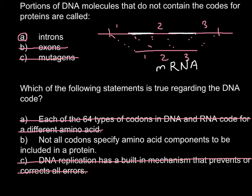So we're left only with answer B. Not all codons specify amino acid components to be included in a protein. And that's true. We have three codons that are stop codons, and this is UAG, UAA, and UGA.